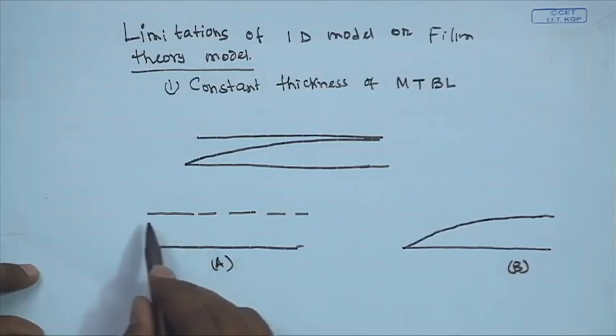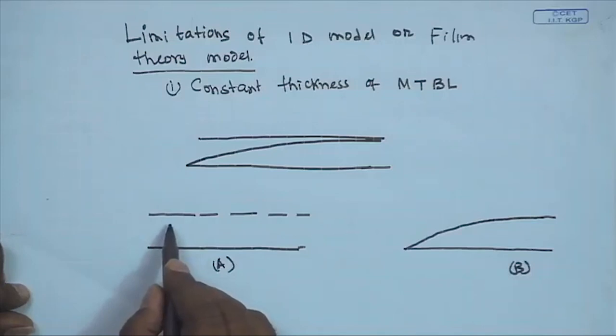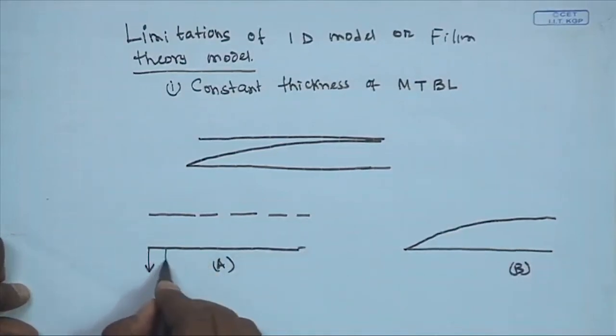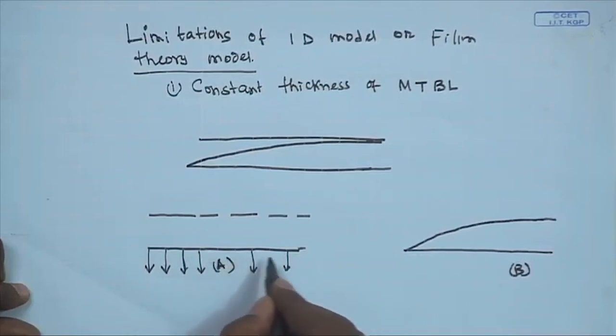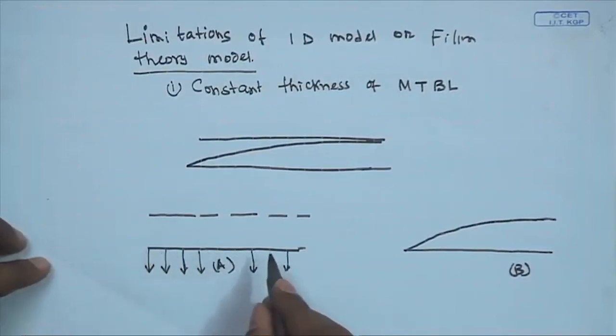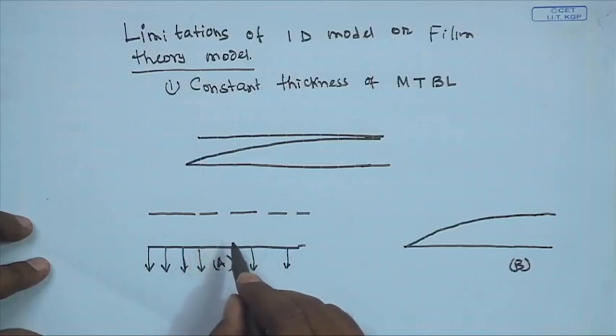The thickness of the mass transfer boundary layer offers resistance against the solvent flux. If the thickness is greater, we get less solvent permeate flux. If the thickness is less, we get higher permeate flux across the membrane. With a constant thickness assumption, the permeate flux remains the same as you go along the length of the module.